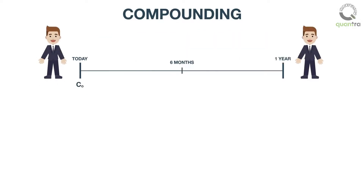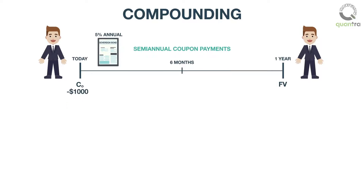For example, assume that a 5% annual interest rate bond makes semi-annual payments. That is, for an investment of $1,000, you will get $25 after the first six months. The rate of interest for the first six months is 5% divided by 2, that is, 2.5%. Hence you get $25.